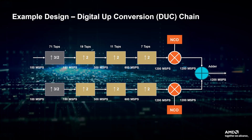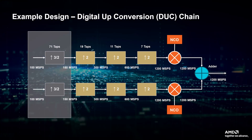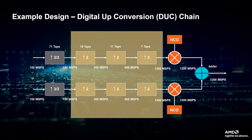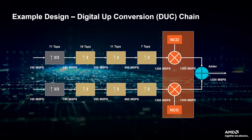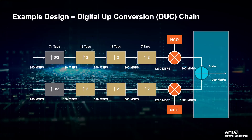We can use an example to explain rapid prototyping further. Here, we are looking at a digital upconversion, or DUC chain. The digital upconversion chain is a key component in wireless communication systems to translate a signal from baseband to intermediate frequency band. In our example, the DUC chain contains an FIR fractional resampler, a series of half-band interpolators, DDS mixer functions, and an adder functional block.